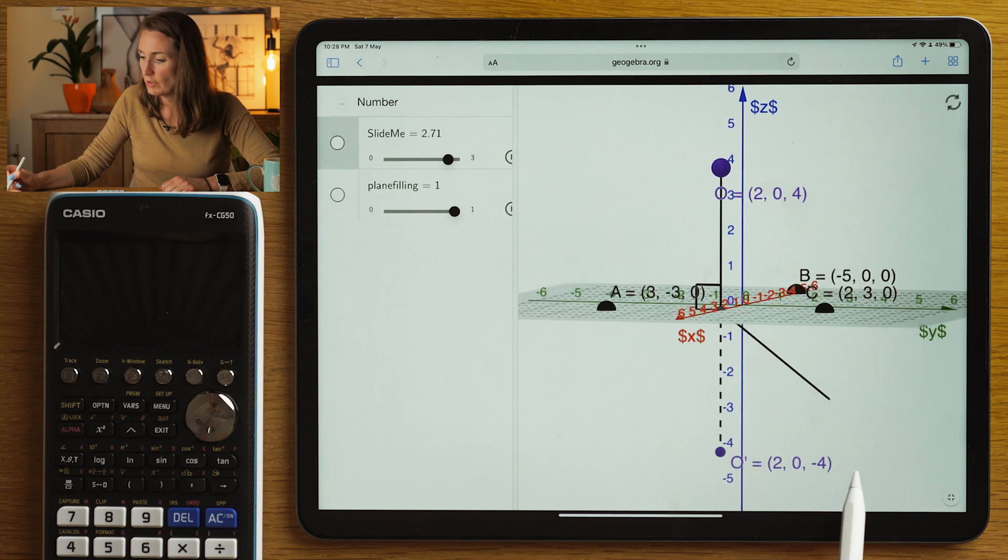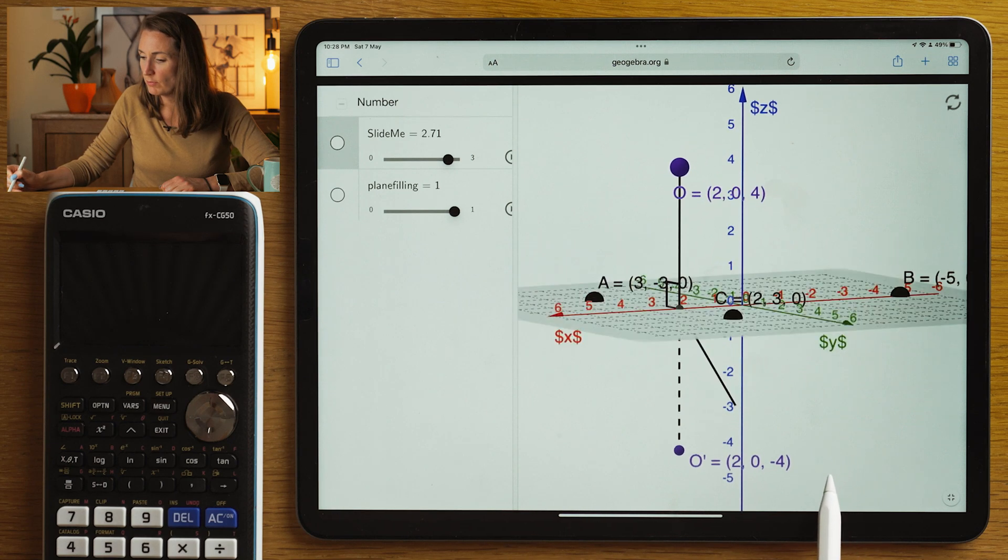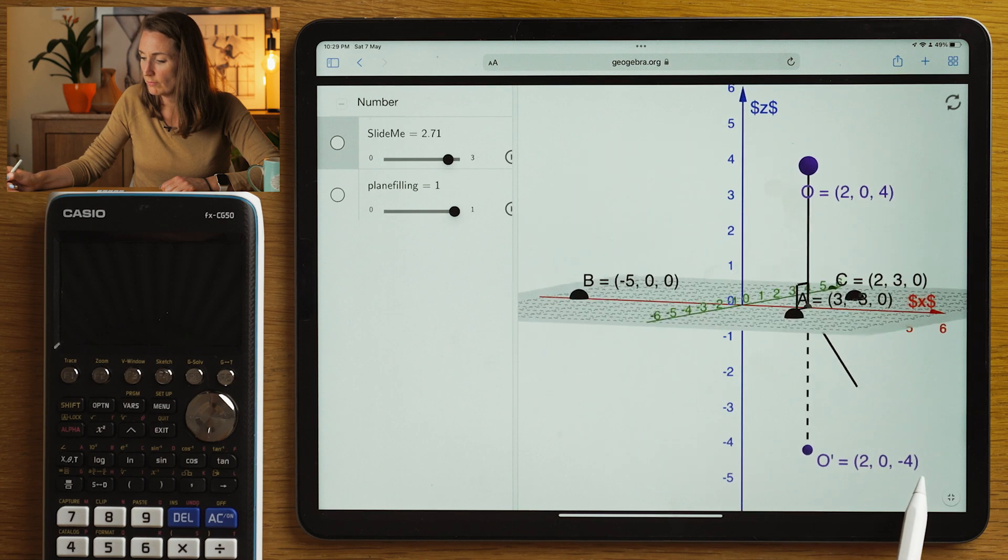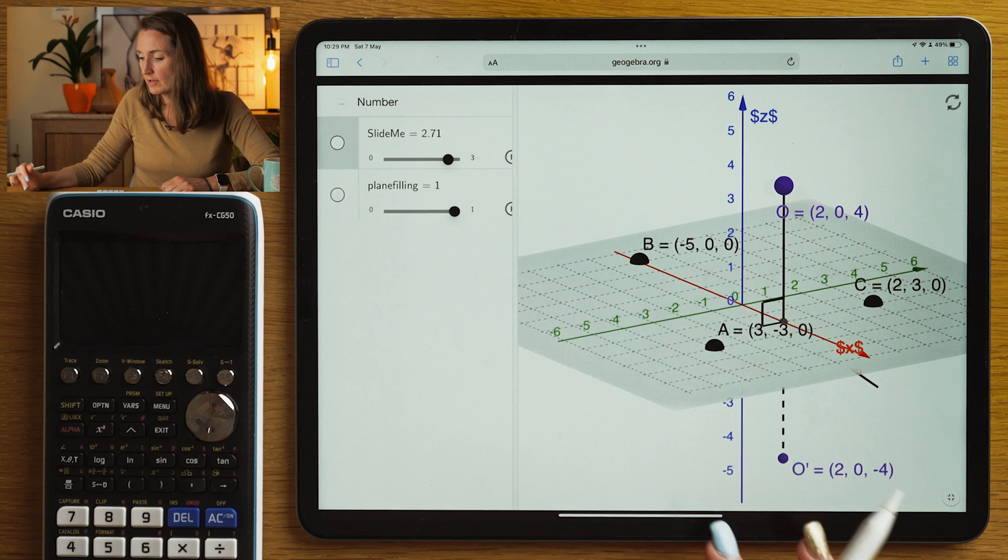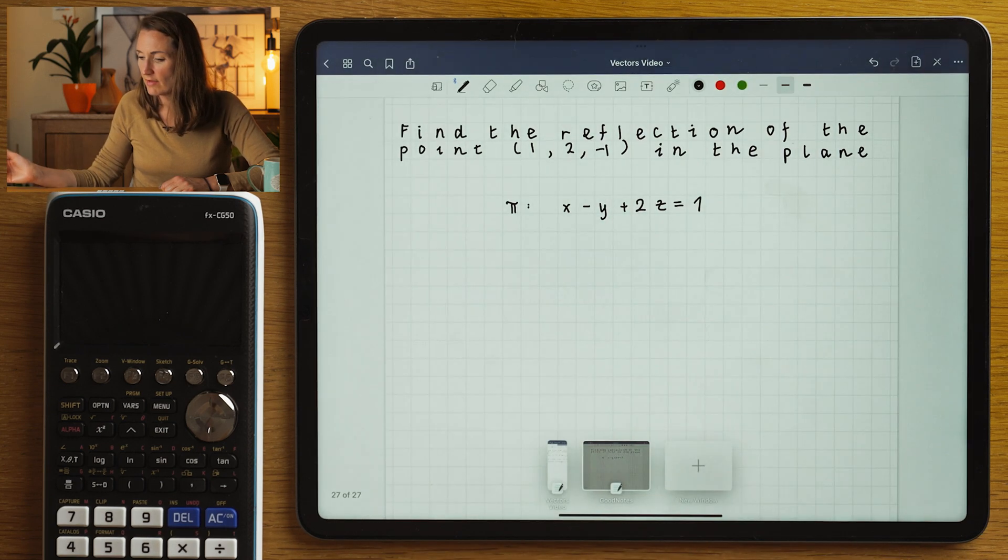If you were to join them up, they would be moving along the normal and that's how you're going to get the reflection. So I've made a cool example for you today and let's have a look at it.